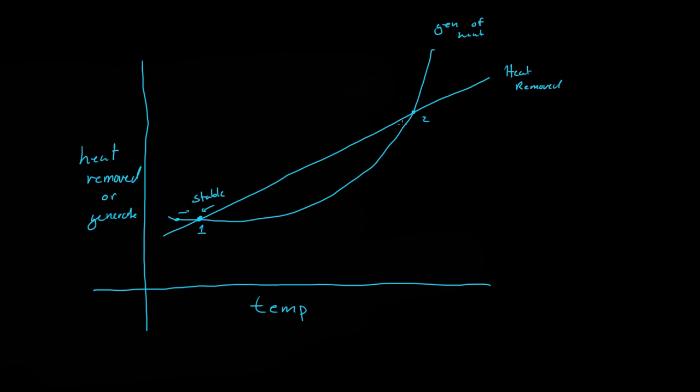Now this point is the unstable point. Any point in here, if the reaction is anywhere in this area, or actually below this temperature, it will go back to point one. However, if it goes above point two, more heat will be generated than can be removed. And this is where we have a runaway reaction.